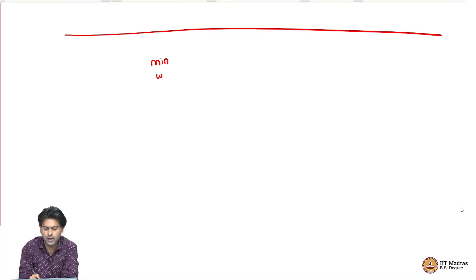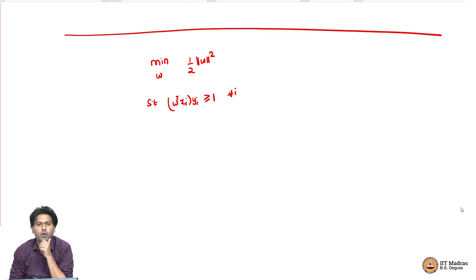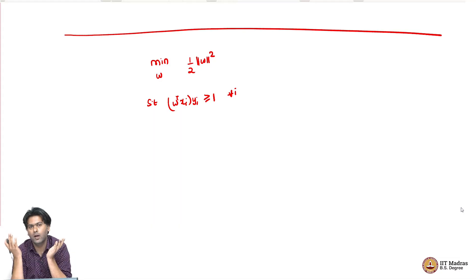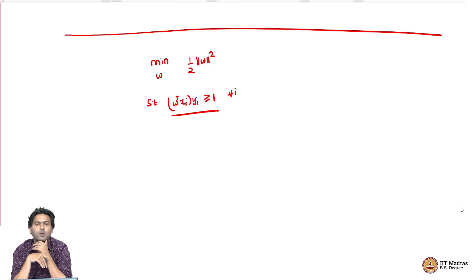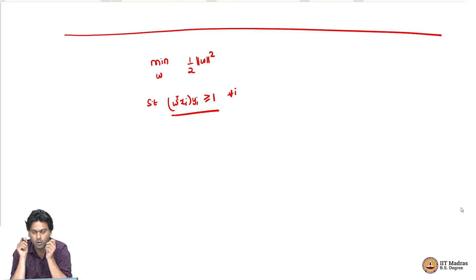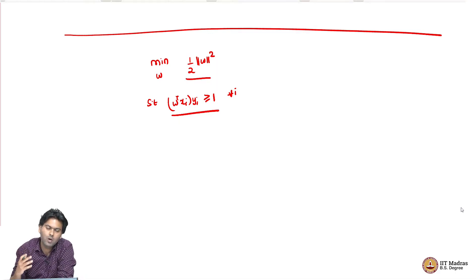Let us first look at the original formulation of the support vector machine. You want to find a W that minimizes the norm squared — or equivalently maximizes the margin width — when you fix the margin to be 1. Now if your dataset is not linearly separable and has outliers, this algorithm will not run, because it only considers W's for which W transpose xi yi is greater than or equal to 1 for all data points. Not all W's are going to be feasible.